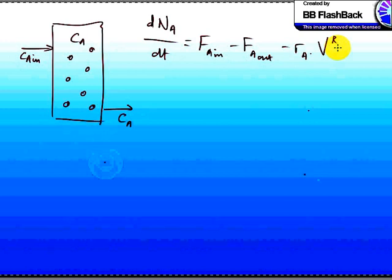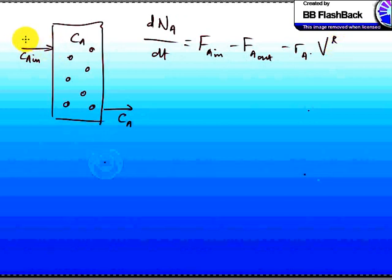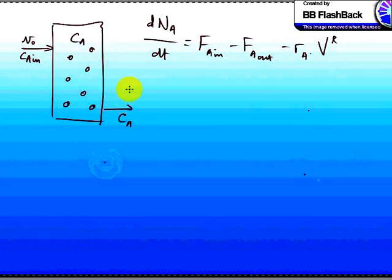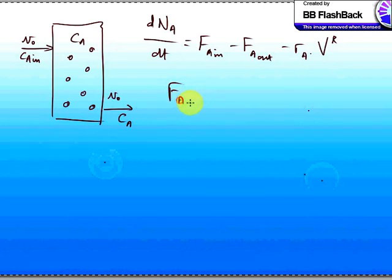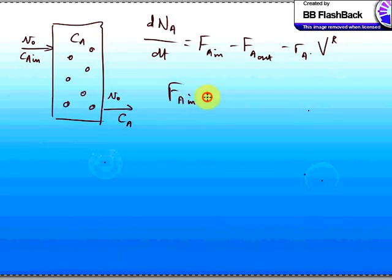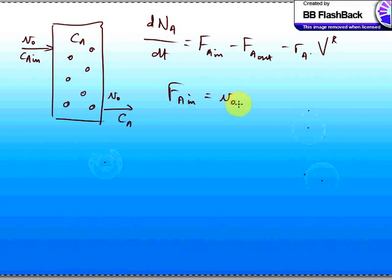So if we say that we are feeding A to that system at the volumetric flow rate V_naught, then at steady state, the volumetric flow in must equal the volumetric flow out here. So let's say that's V_naught over there. Then we can say that the molar flow of A in, then that must be the volumetric flow multiplied with the concentration of A in the stream. So C_A_in.